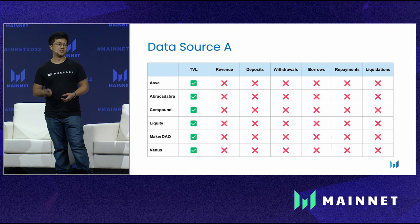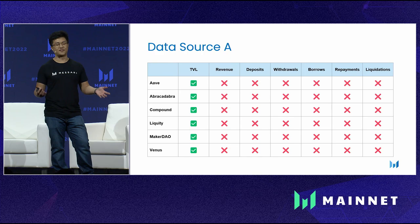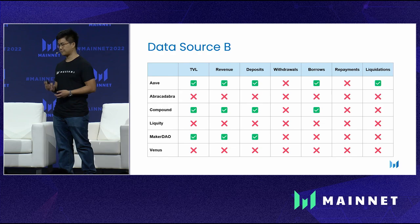Isabel goes off to do this fundamental analysis, essentially trying to fill out a dataset with the metrics she's interested in across all the protocols she cares about. She finds data source A, which has great coverage in terms of the protocols she's interested in, but it only has one metric she cares about: TVL. She can use data source A for TVL, but she'll need to find another data source for the other metrics.